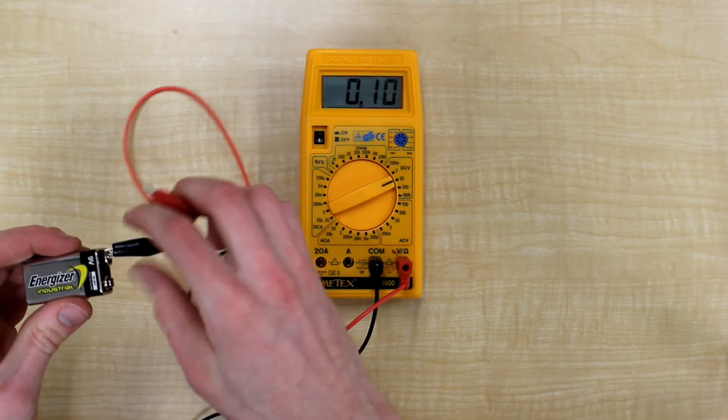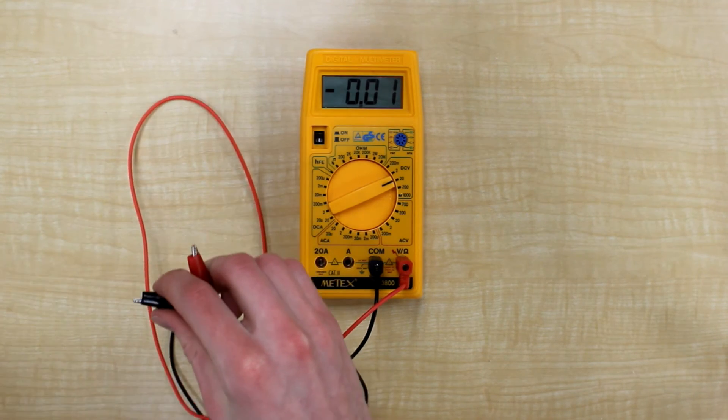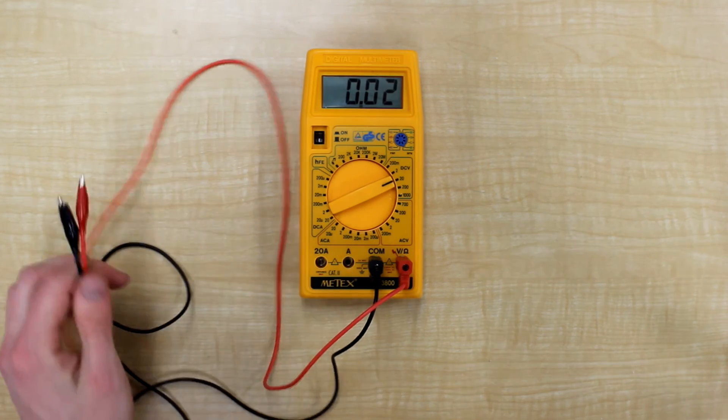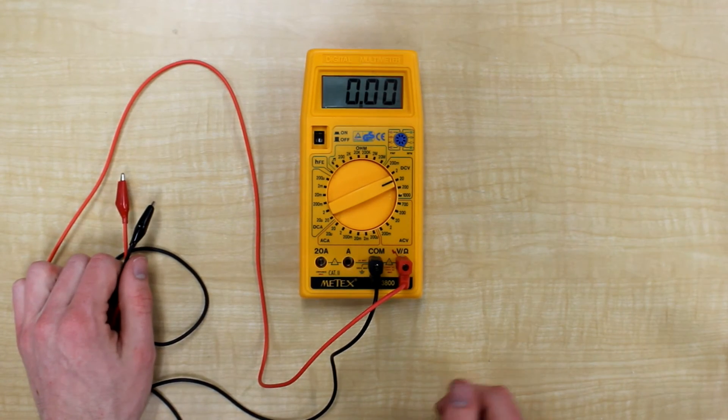This variance can depend on the manufacturer of the battery, or how old the battery is, as the voltage that comes out of a battery will decrease over time.